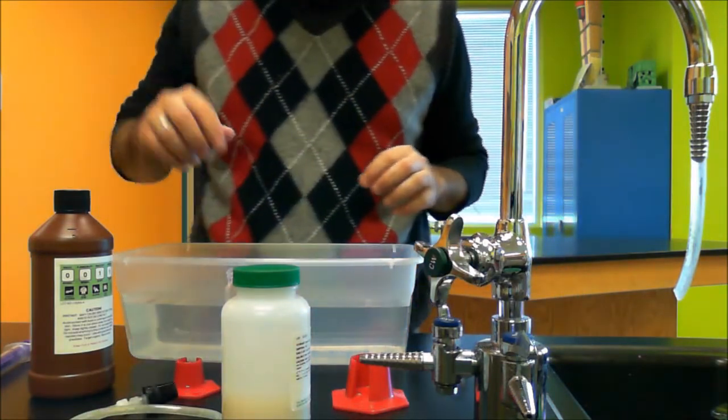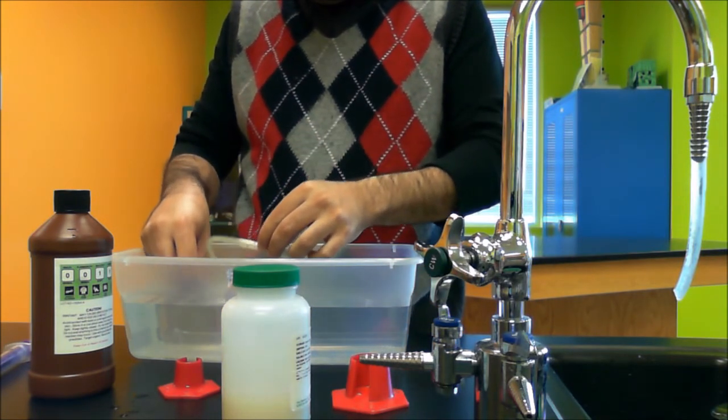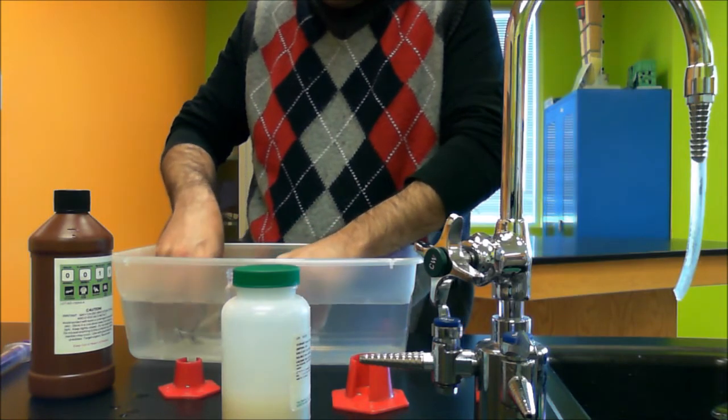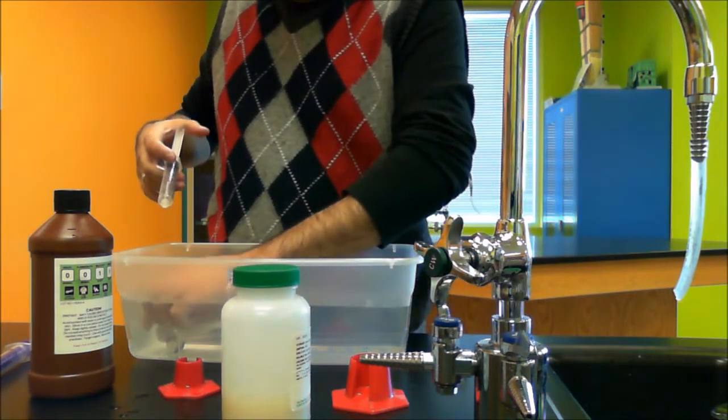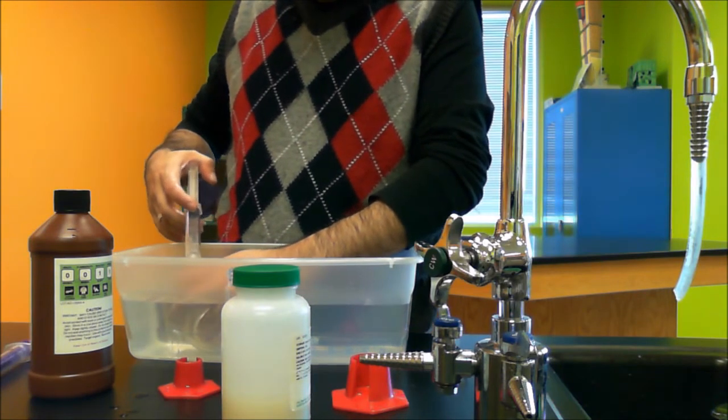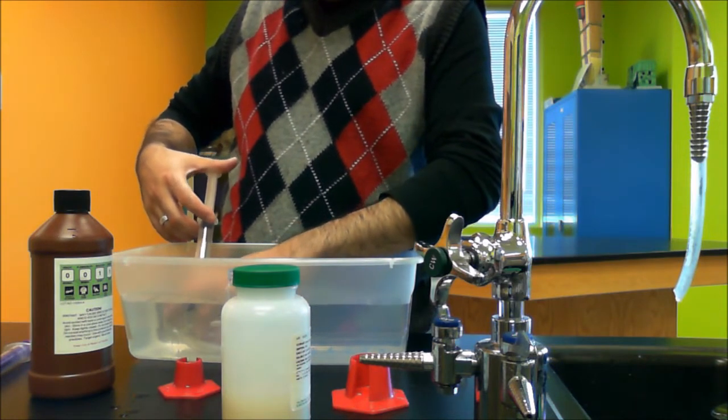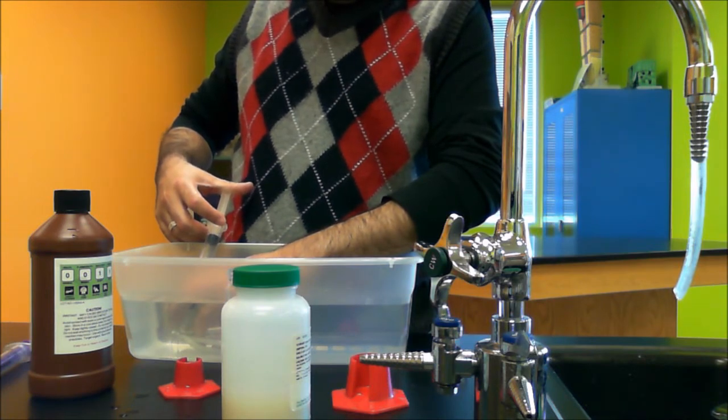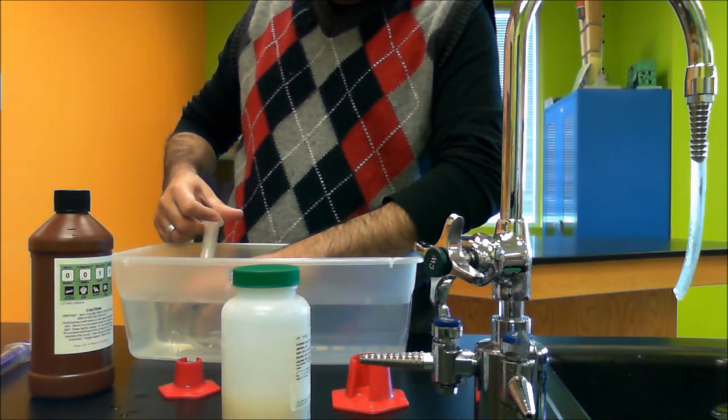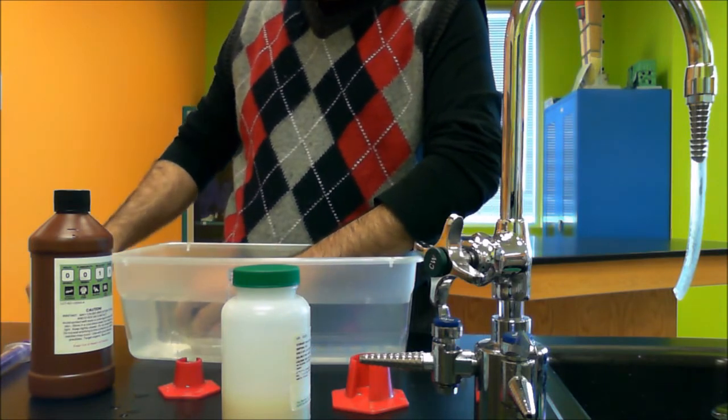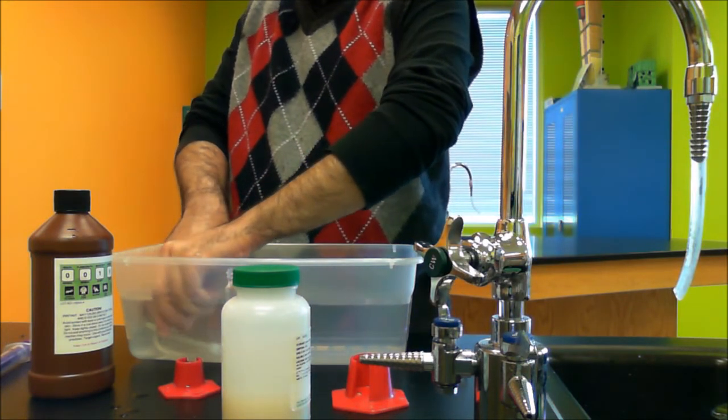So after you submerge your graduated cylinder, submerge your plastic tubing with your rubber stopper in it and using this syringe, inject air in your plastic tubing so there's no water remaining in the plastic tubing. Insert your plastic tubing in your graduated cylinder.